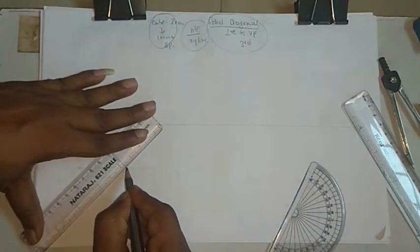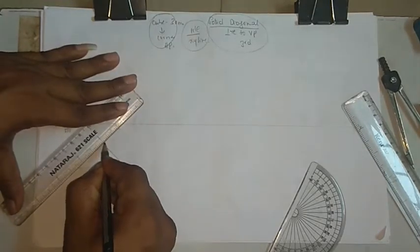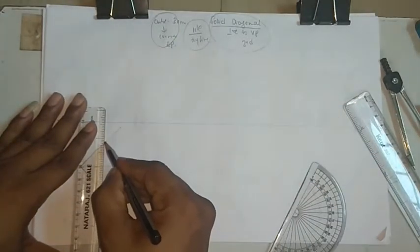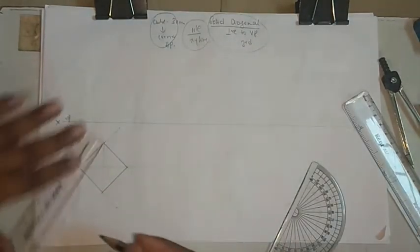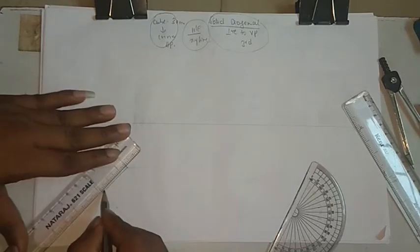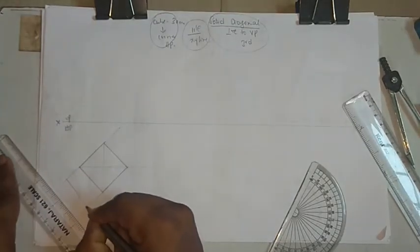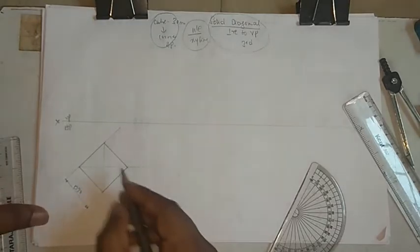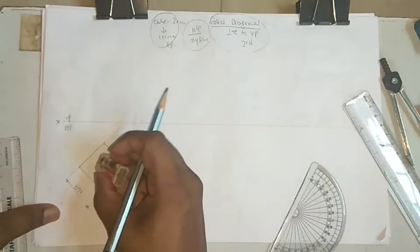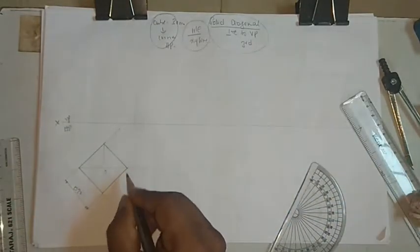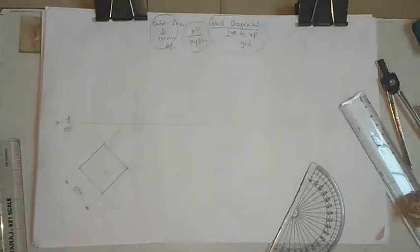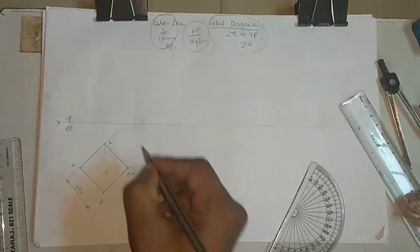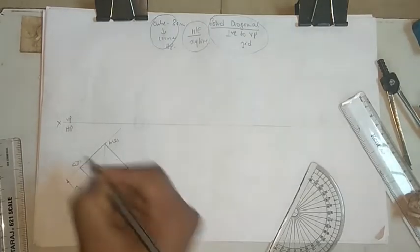Draw the dark lines for the visible edges. Drop the naming here with the projection. The cube symbol with 30mm is noted. Since we have a solid diagonal, no need to mark the center separately. The cube has two squares - one above and one below. For the top square write A, B, C, D and for the bottom, since it's not visible, write 1, 2, 3, 4.